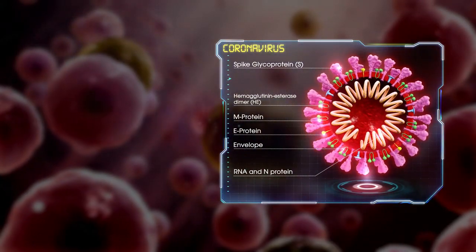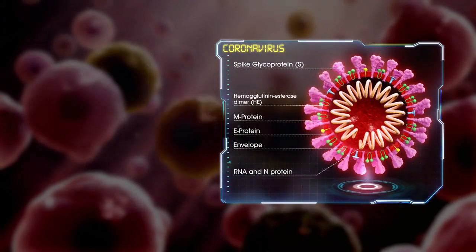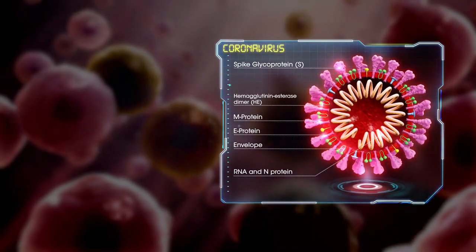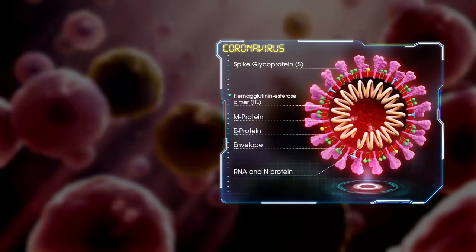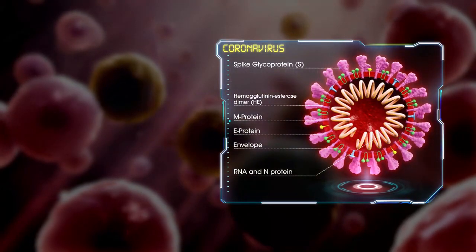On the surface of the virion are S and HE proteins. The structure of 2019 novel coronavirus is a mutation.